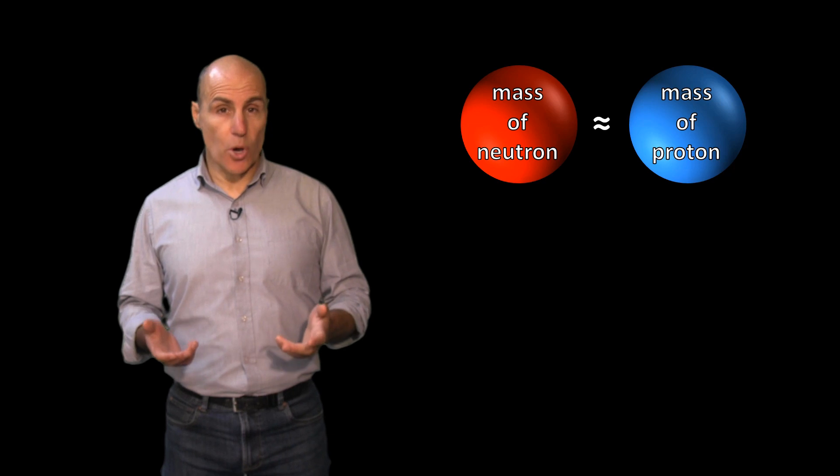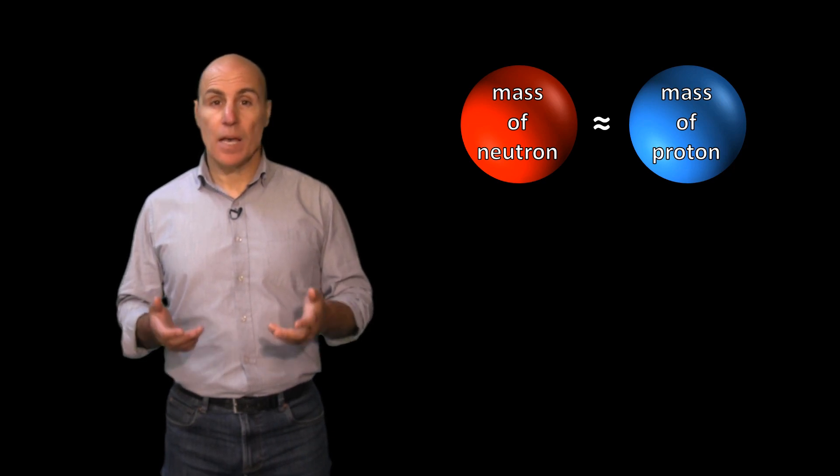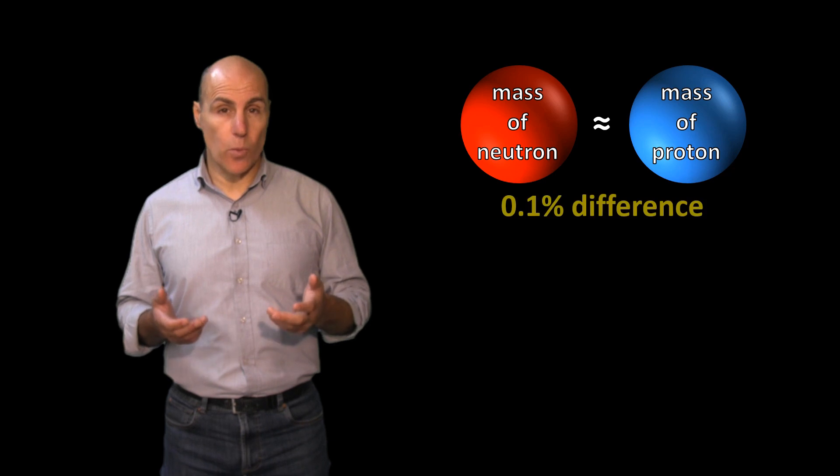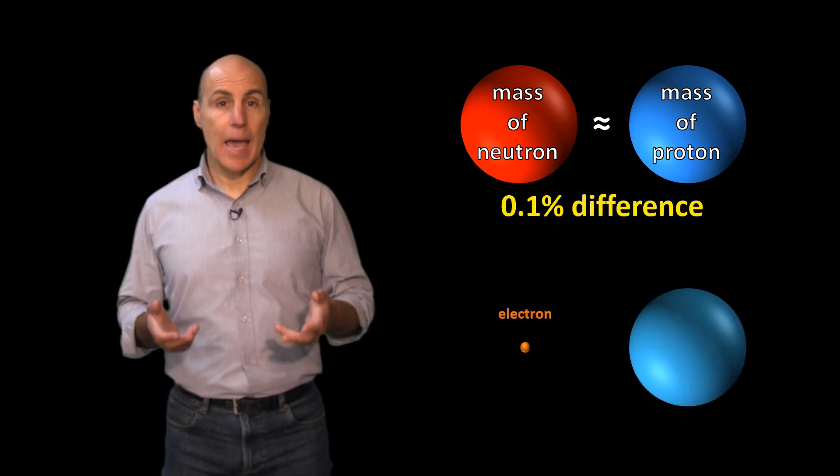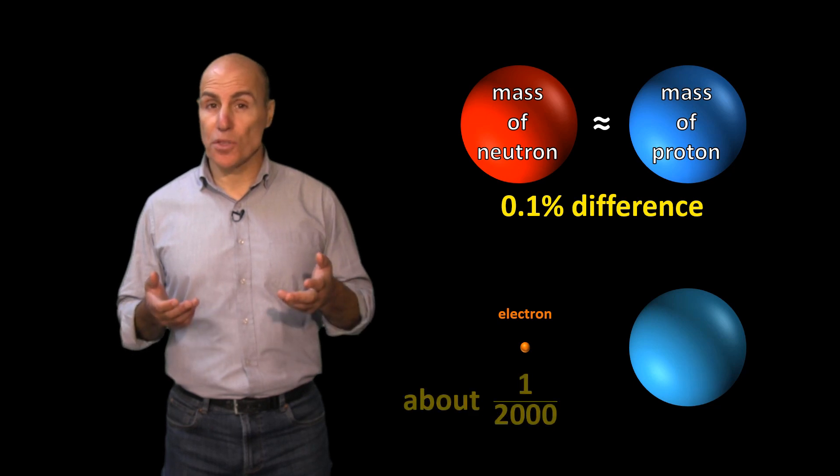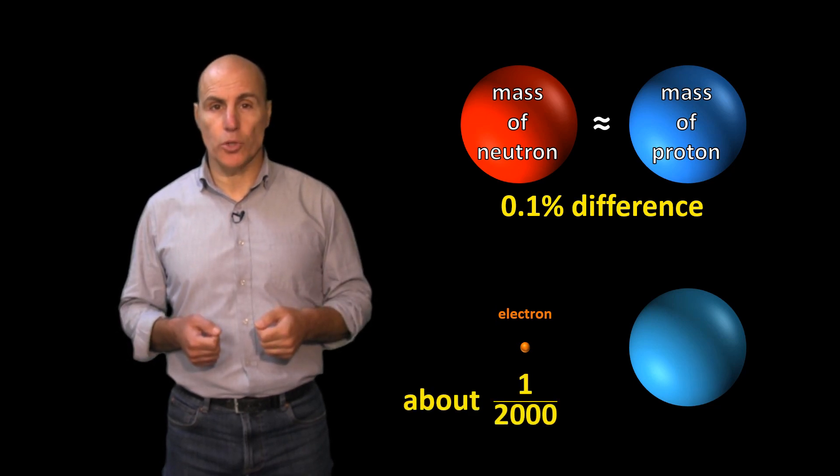Neutrons and protons have approximately the same mass. There's only about a 0.1% difference between them. An electron, by the way, has a mass of only about 1/2000th of the mass of a single proton or neutron.